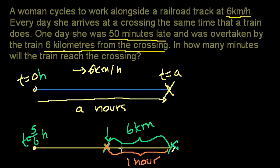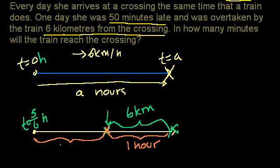The train will have long passed her, but to get back to the crossing, she's going to have to travel for another hour. If her whole route takes her a hours, then this distance right here is going to take her what? She has an hour left, so this is going to be a minus 1 hours.